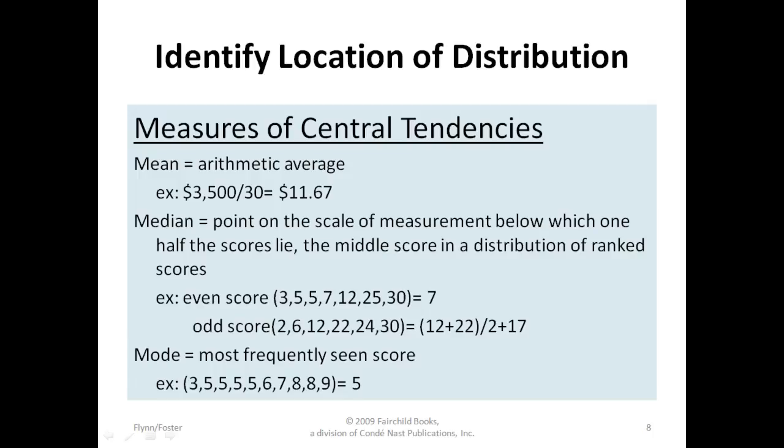Next is median. Median is the point on the scale of measurement below which one half of the scores lie—the middle score in a distribution of ranked scores. An example: if you had seven scores, then the fourth score is going to be your median because it's the one right in the middle. However, if you had six scores, then you don't have one that's in the middle by itself. So you take the two in the middle—the third and fourth score—and you divide it by two. So it would equal 17.